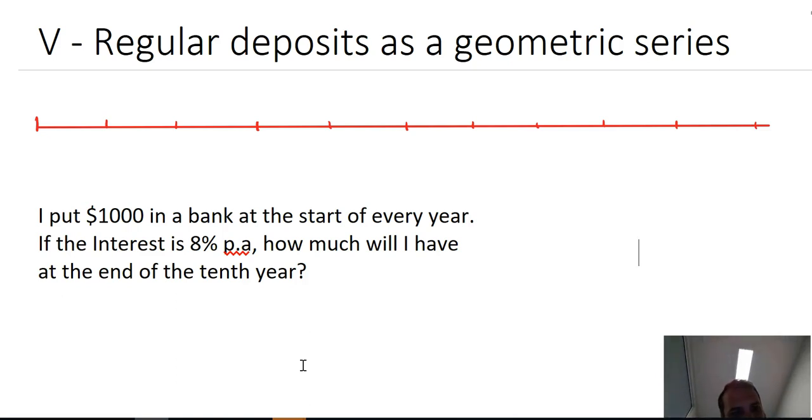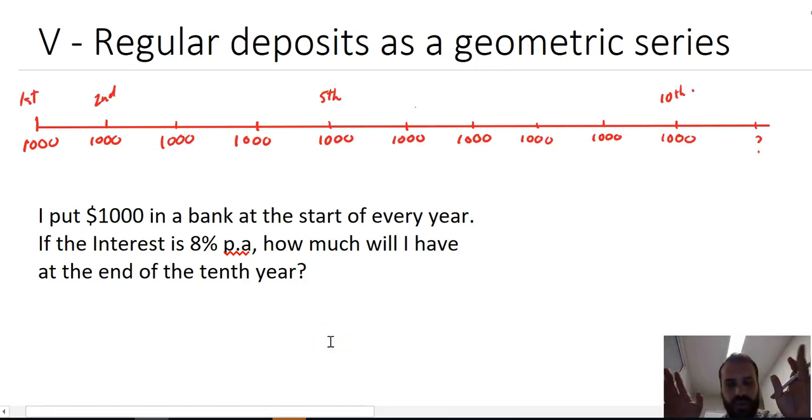So that means that I'm putting $1,000 in the bank here, $1,000 in the bank here, $1,000 in the bank here, and so on. Draw this timeline, and you always should draw a timeline when you're doing a question like this.